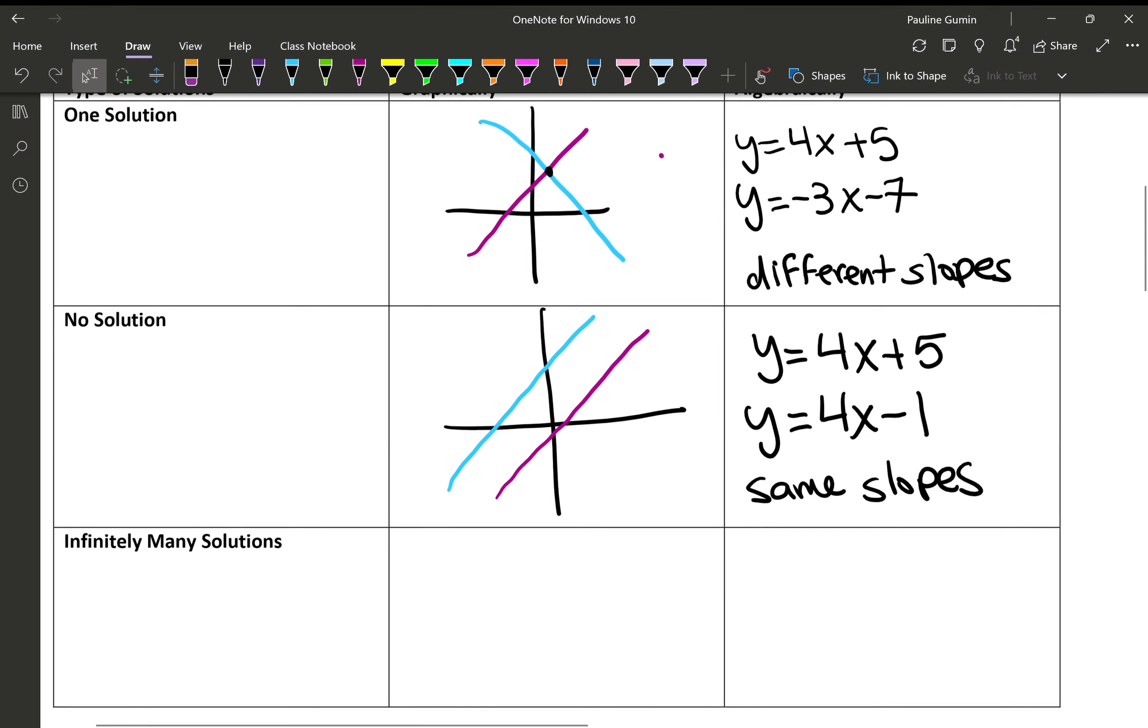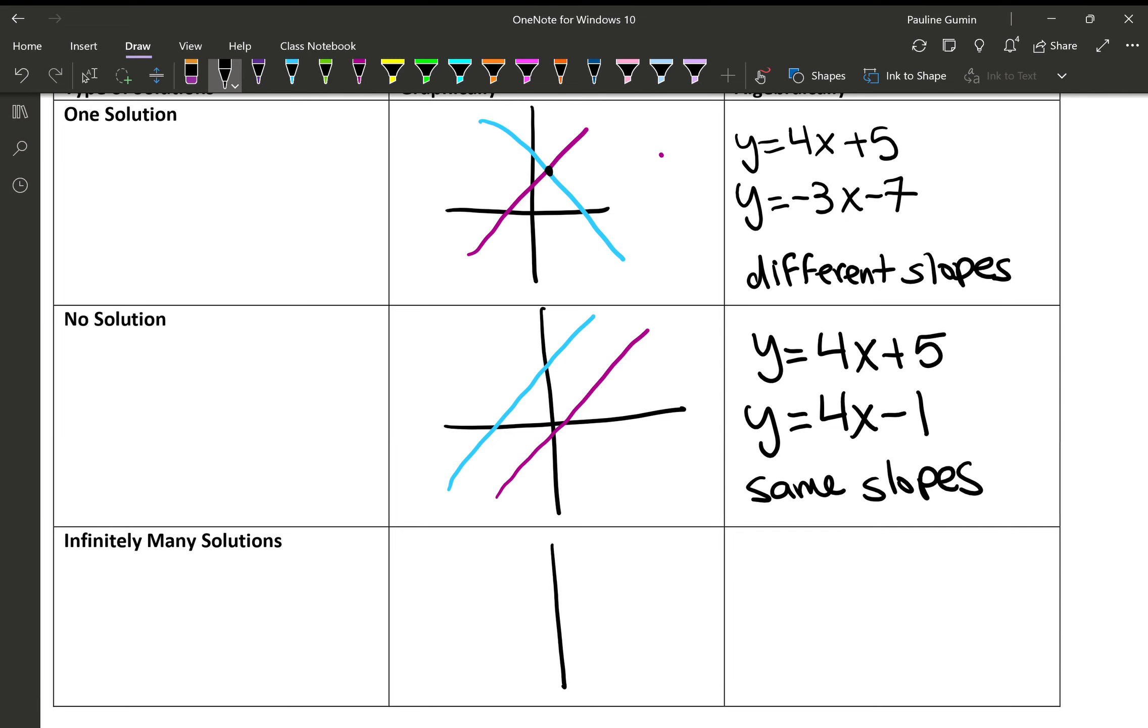We also have something that's called infinitely many solutions, just like in our regular equations. If you imagine this is our quadrant, if we graphed both lines, they would go right on top of each other. This happens when they have the same everything. Now, when we're solving them, remember, if we get one solution, we'll get some sort of answer. If we get no solution, we'll get something like a false answer, like three equals five. And infinitely many, if we're solving it without graphing it, we'll get a true answer, like five equals five.